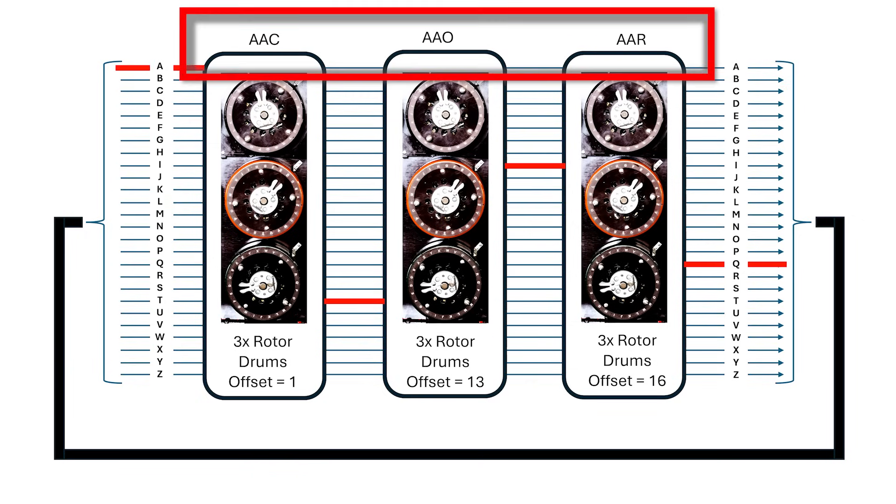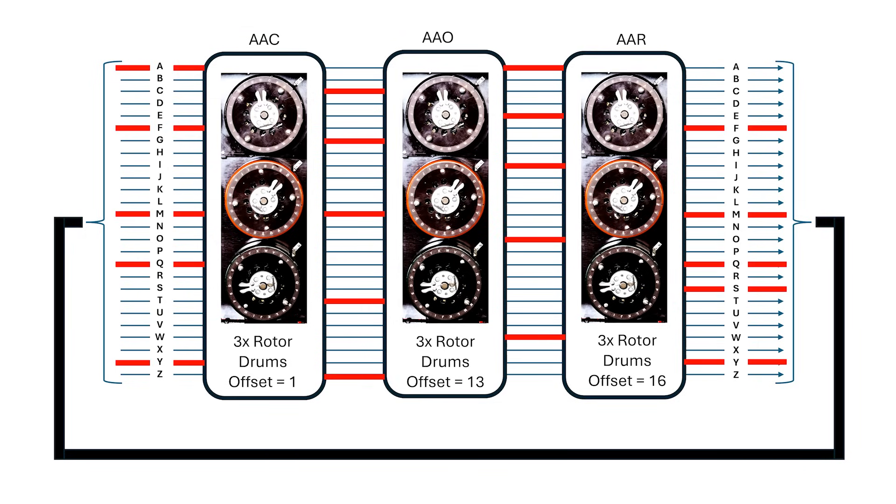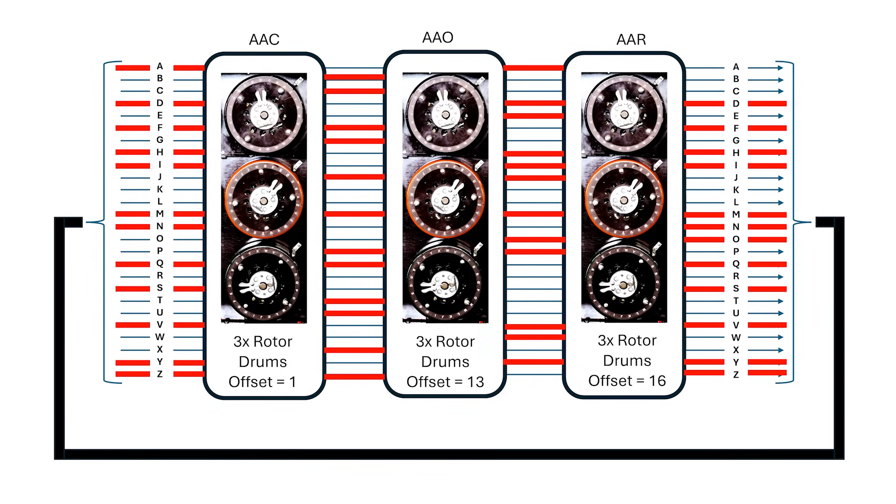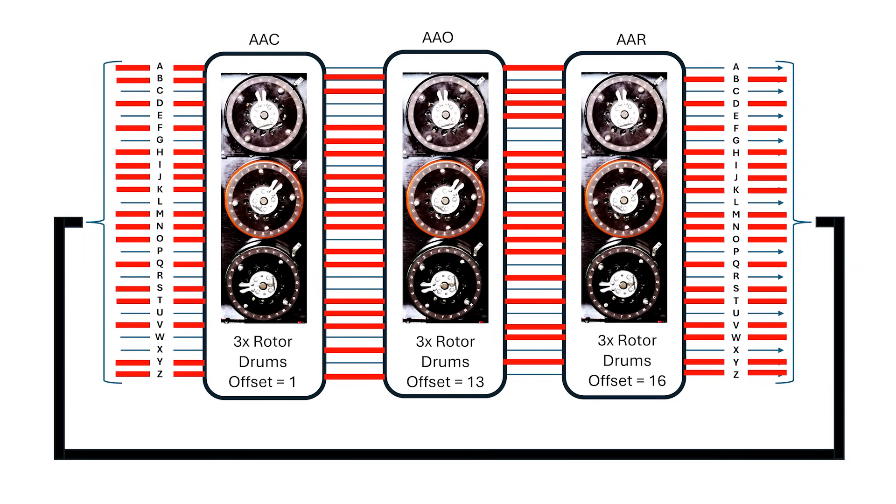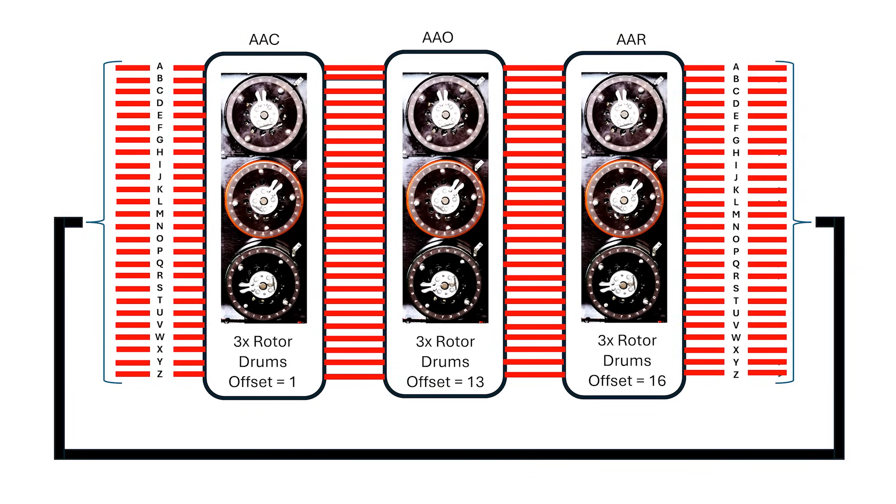But, what if our rotor settings were wrong, and there were no closure loops? Well, if we apply voltage to any hypothesis wire, it'll rapidly spread to all other wires, and by rapidly I mean at the speed of light, and all 26 wires will carry the voltage.